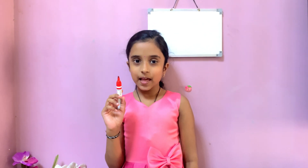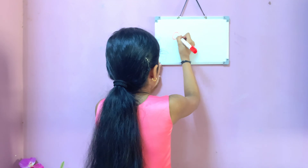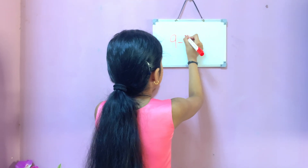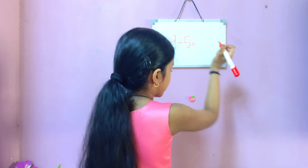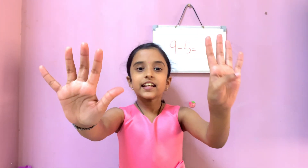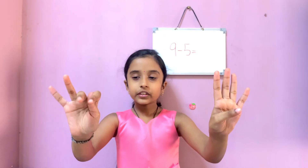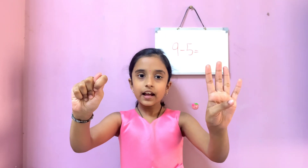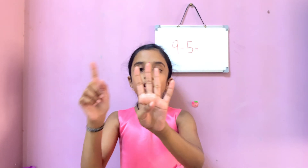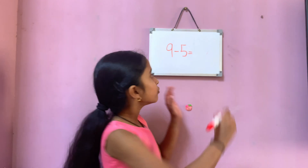Let's see another example. Here I am writing nine minus five. Big number nine in hand. Now let's take away five. One, two, three, four and five. How many are left? One, two, three, four. So the answer is four.